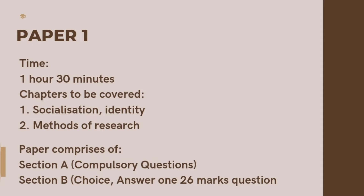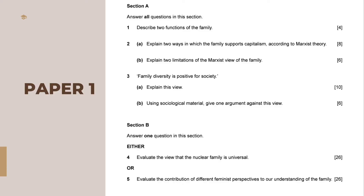The paper comprises section A and section B. I've placed a copy of the paper in the next slide to show you. In section A you have all compulsory questions: question one is a four-mark question, question two is an eight and six-mark question, and question three is a ten and six-mark question. In section B you are given two questions from which you have to choose one — each worth 26 marks — making a total of 60 marks for paper one.